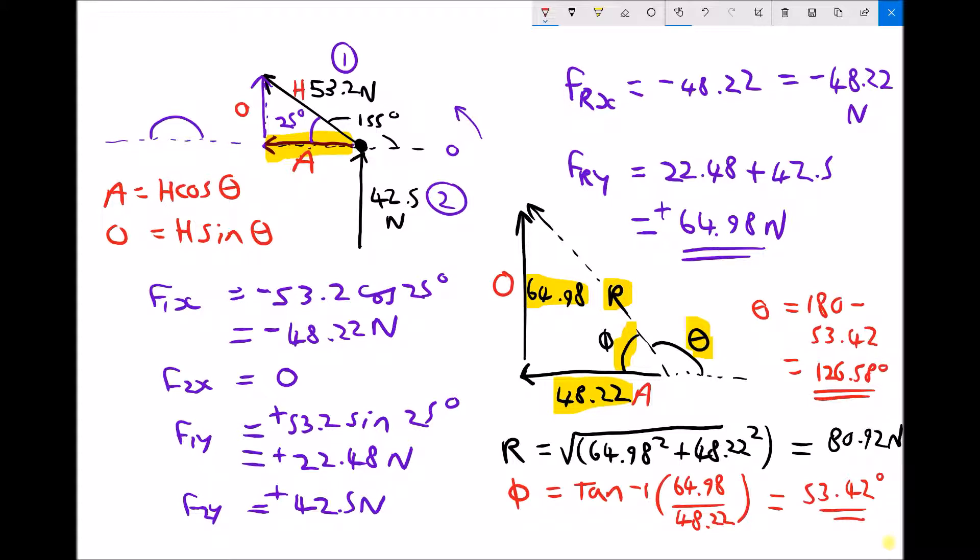So all that's left is to write our summary line. And our summary line states that the resultant equals 80.92 newtons at a bearing of 126.58 degrees. So that is the evaluation of the resultant force.